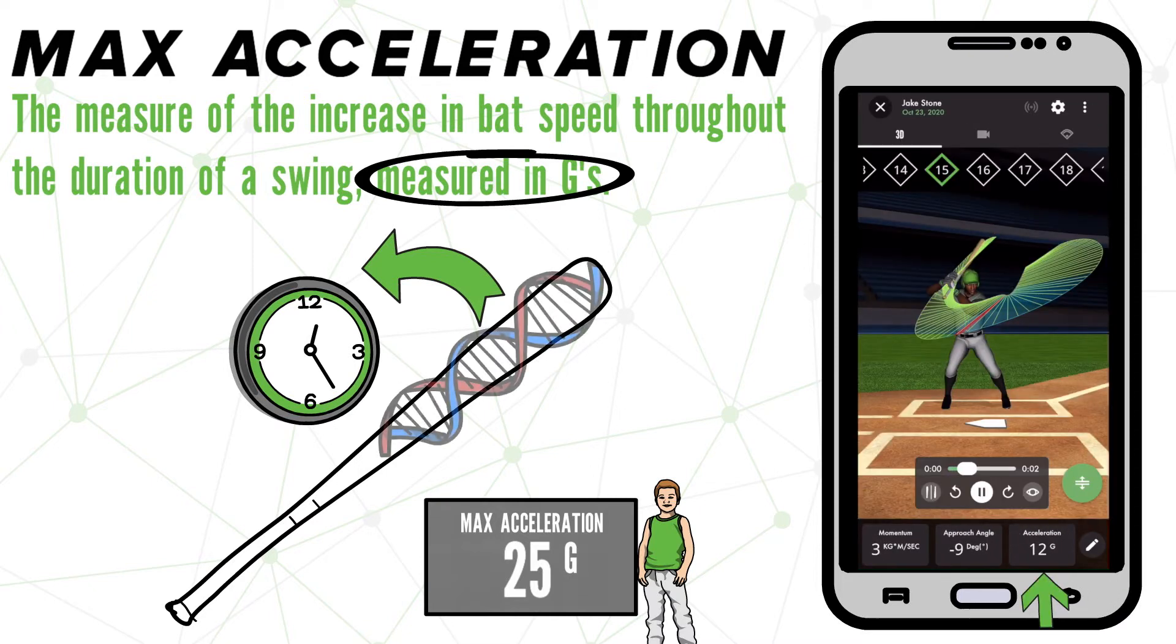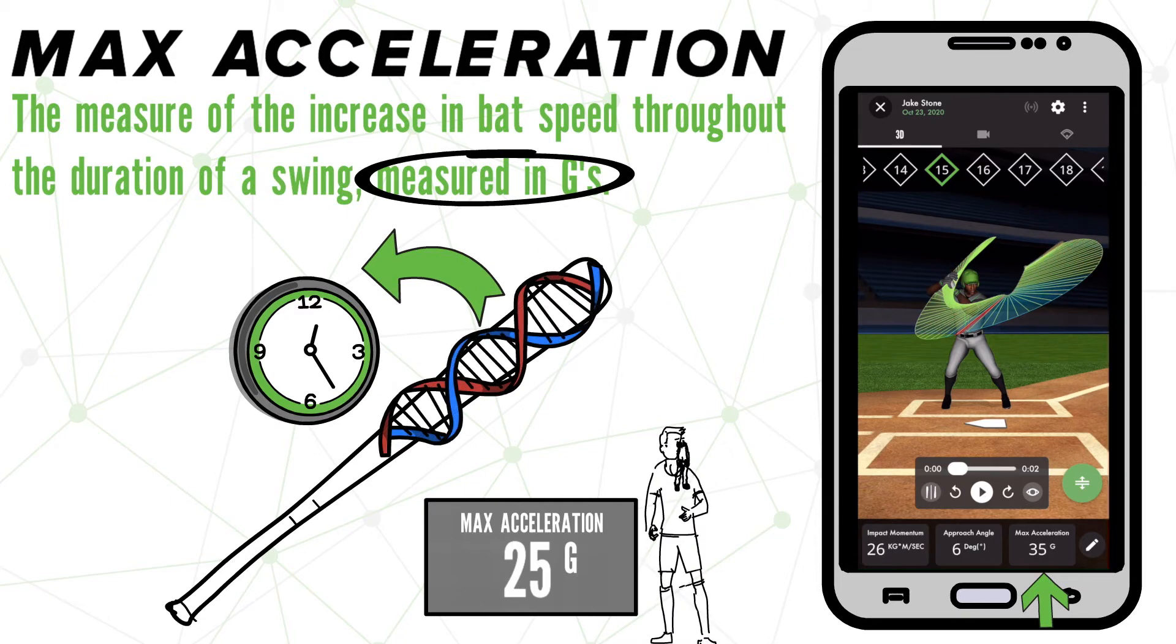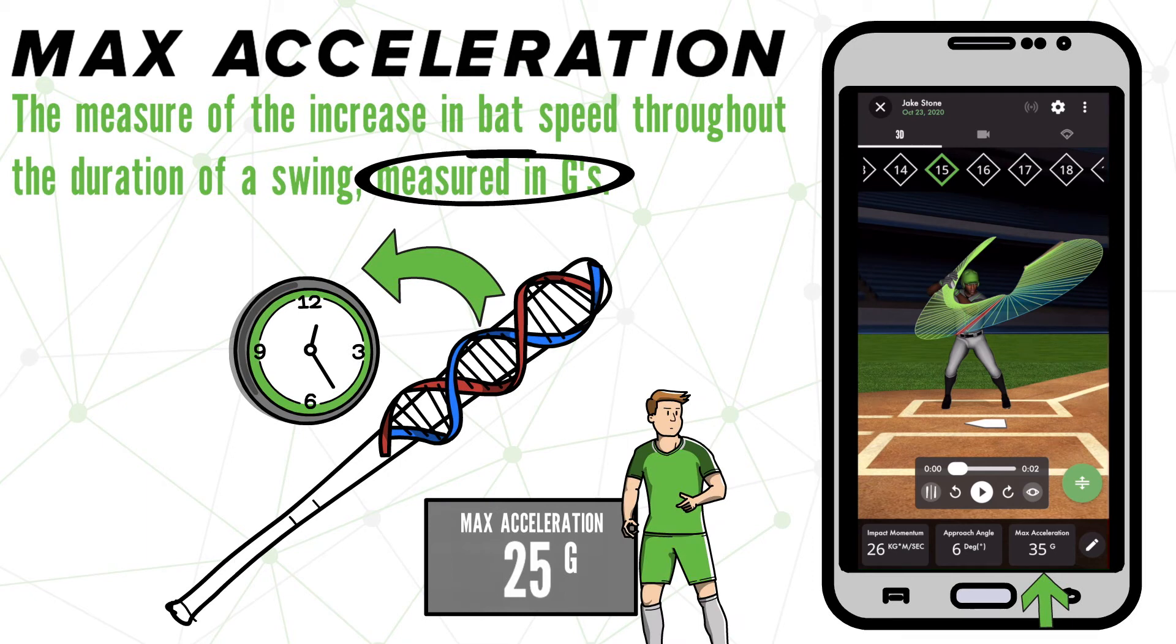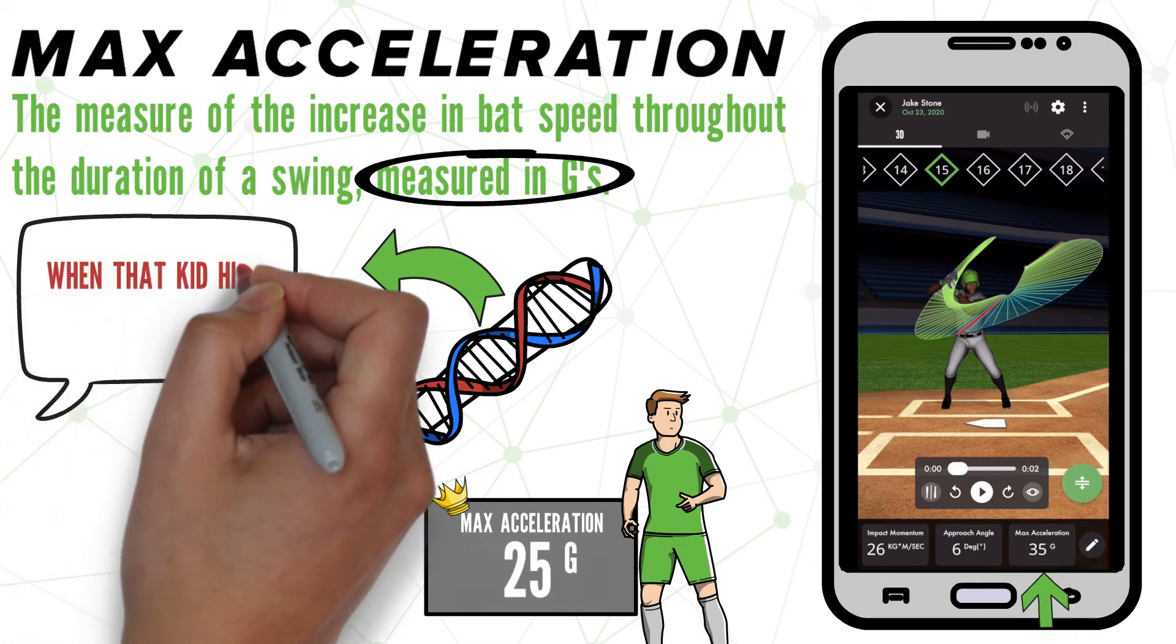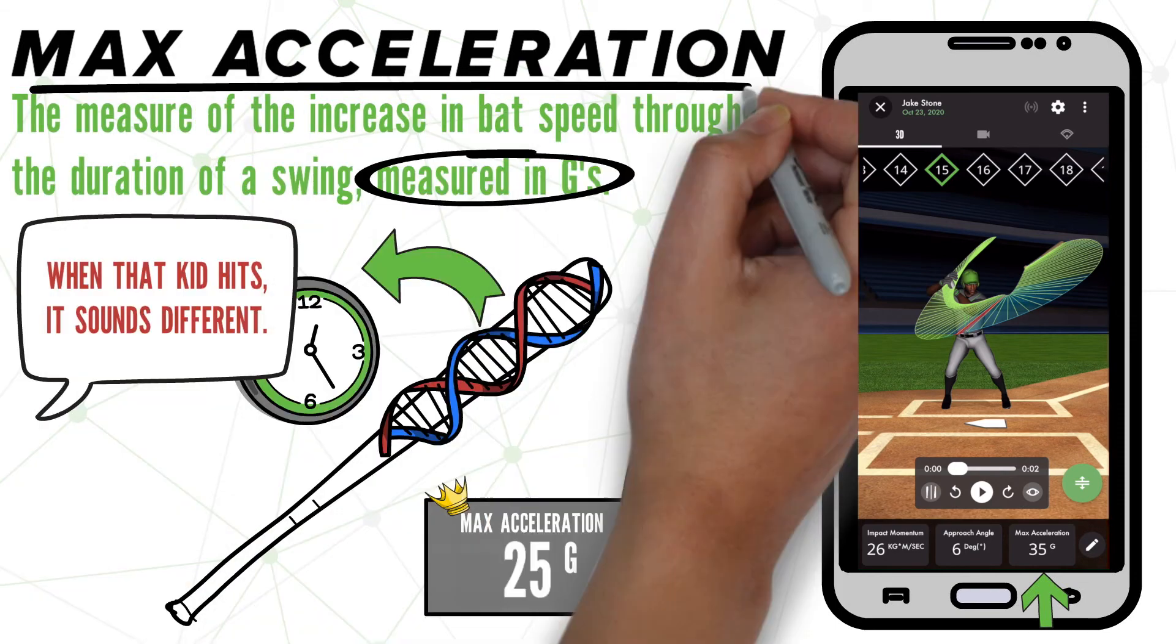Great bat acceleration is in the DNA of great hitters, and if you can master this metric, you may be able to play this game for a long time. Max Acceleration sticks out from some of our other metrics, because it requires all parts of the swing to sequence together to achieve great acceleration. You may have heard someone say before, when that kid hits, it sounds different. And this metric is the science behind that saying.